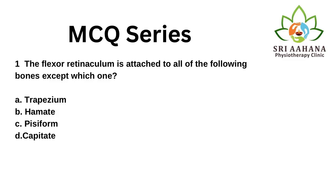The flexor retinaculum is attached to all of the following bones except which one? A. Trapezium, B. Hamate, C. Pisiform, D. Capitate. The correct answer is D, Capitate. The flexor retinaculum has its attachment to the trapezium, hamate, and pisiform, but it does not get attached to the capitate.